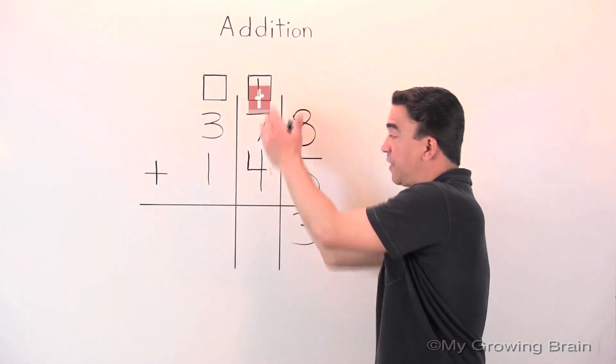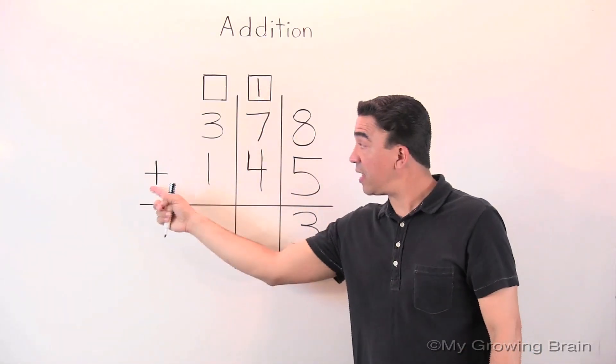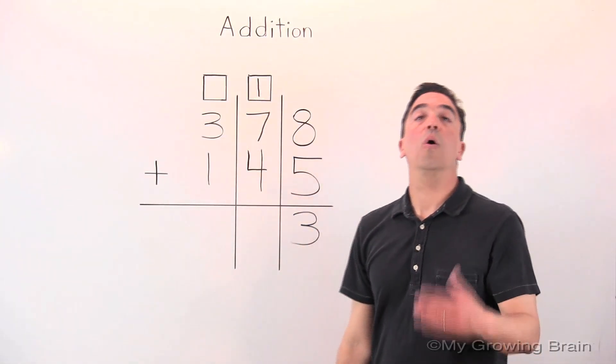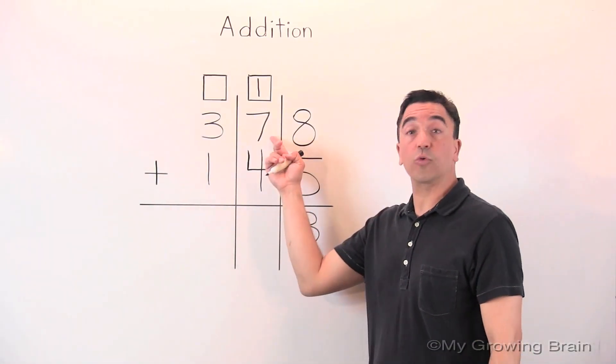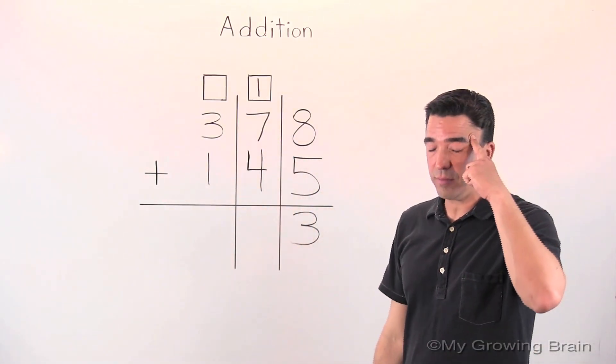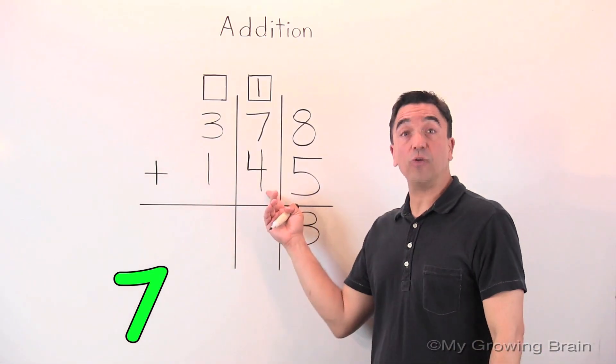Now we're going to go into the tens place. Seven plus four. Once again, I like using the counting-on strategy. So I'm going to take the greater number, seven, put it in my head, and I'm going to count on four.